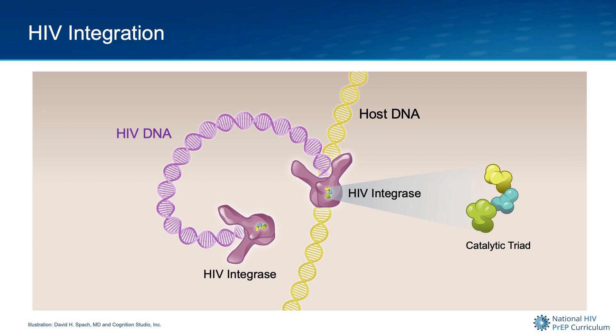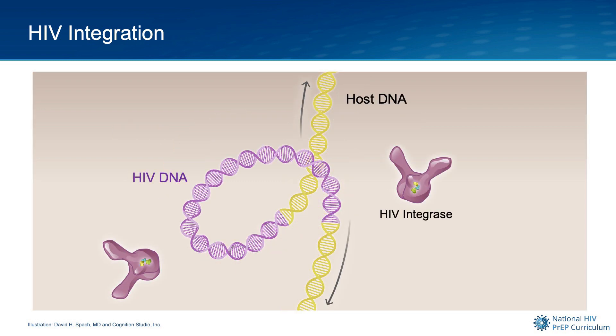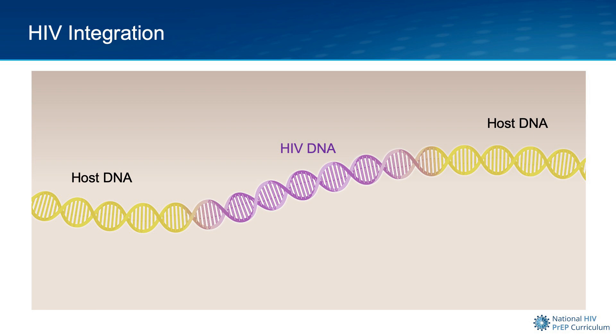The integrase catalytic triad then leads an attack to splice open this region of the human DNA. The second HIV integrase dimer also docks onto and attacks the human DNA, which results in the separation of both strands of the human DNA. After several more steps that involve HIV integrase and host enzymes, the strand of HIV DNA is fully joined with the human DNA, and the HIV DNA is permanently integrated into the DNA genome of the human cell.